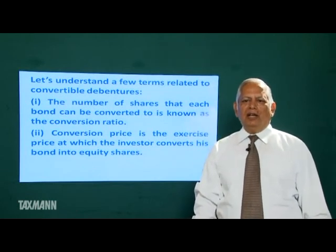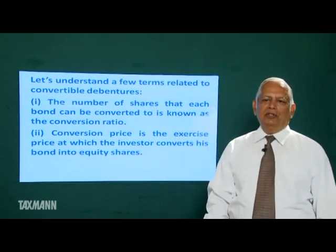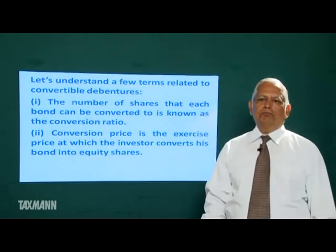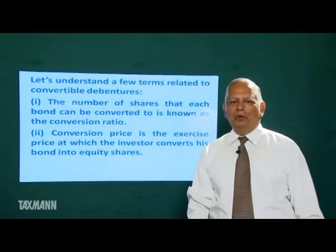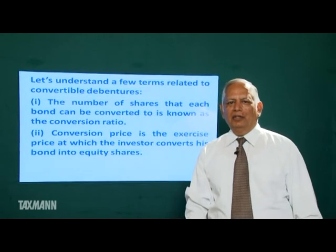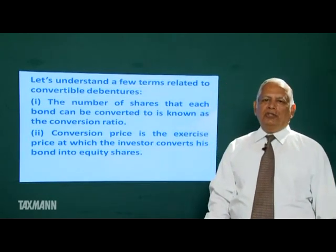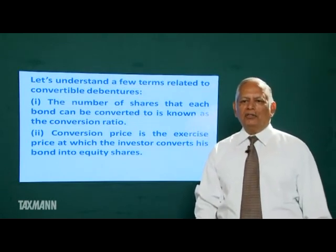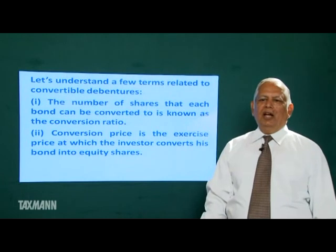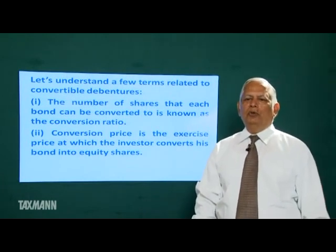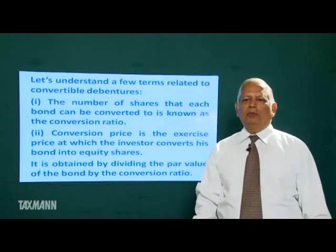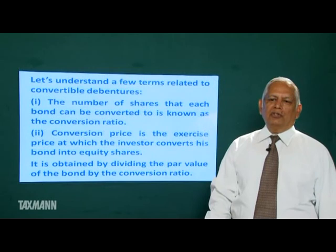Conversion price is the exercise price at which the investor converts his bond into equity shares. It is obtained by dividing the face value of the bond by the conversion ratio. Suppose a company issues a bond at Rs. 200 and it can be converted into 10 equity shares, so the conversion price is Rs. 20.